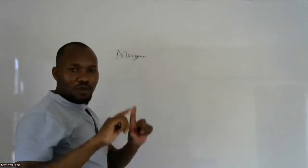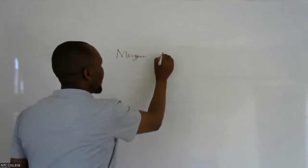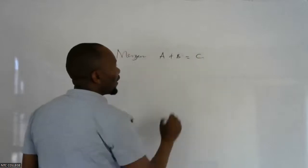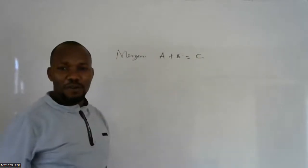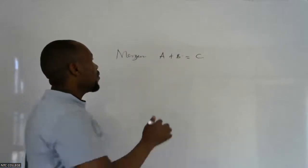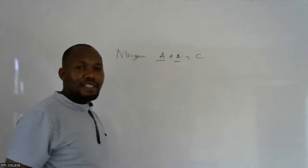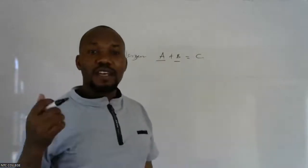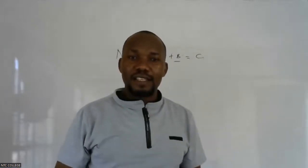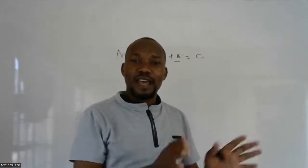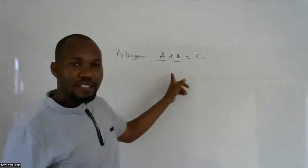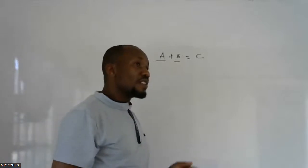A merger is where two companies come together. Company A plus company B, when they come together, form a new company that was not existing before. Both A and B lose their identity. A good example is when NCBA was formed — it was formed out of CBA Bank and NIC. Both NIC and CBA ceased to exist, and so they formed a totally new entity called NCBA. That is a merger.